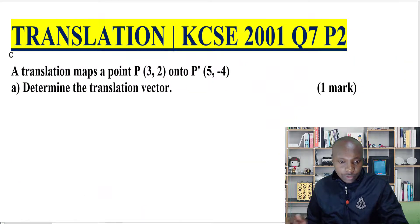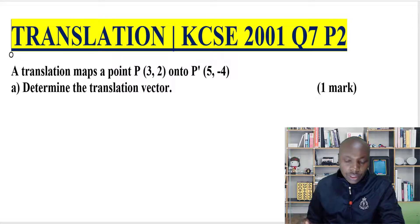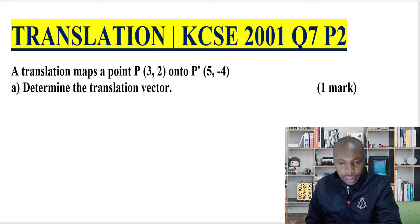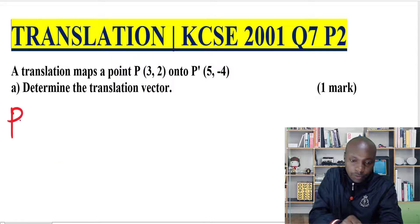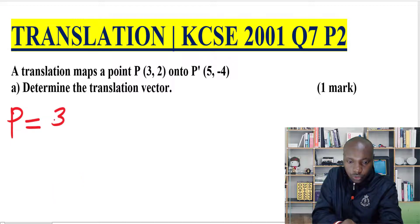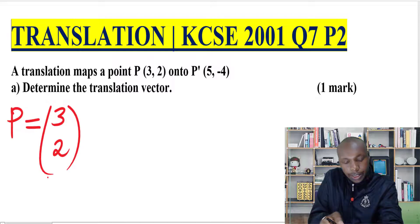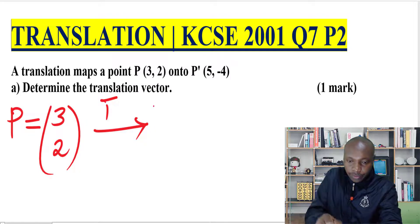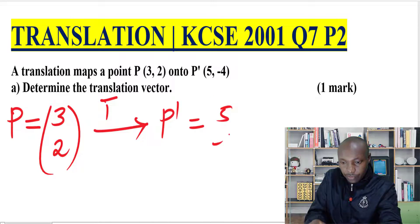So let's go to the first question. We require to get the translation vector. We're given the object point and the image point. The first thing is to write the vectors in column form. So the vector of P, we write it as column vector (3, 2). And this is being translated by T, the translation vector, to P', which is given by (5, -4).